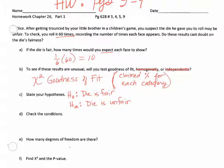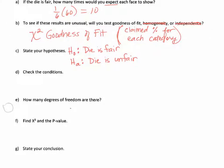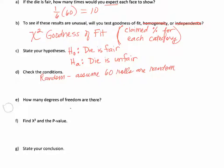Yesterday we learned in our conditions that they are the same except for large enough. For random, we assume our 60 rolls are random — you want to assume you're shaking the die well and rolling randomly, not trying to get one number more than another. For independent, we could say 60 is less than 10% of all rolls, or that each roll is independent of the other rolls because one's not going to affect the other.